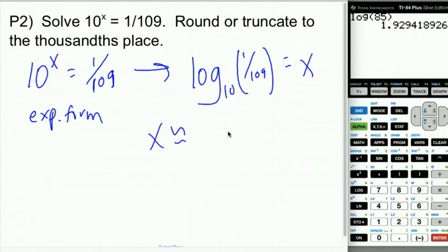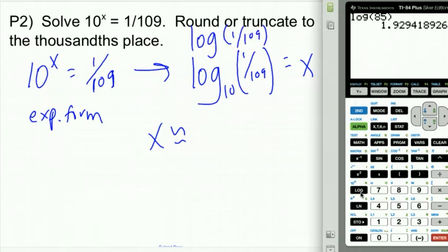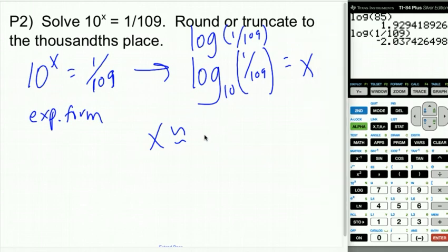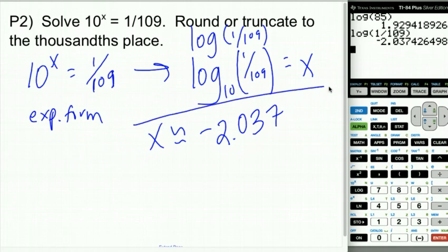I'm going to get that my X is approximately, and I'm just going to type in my calculator log of 1 divided by 109. I'm going to press the log button. I don't need the base 10 because that's what the log button in your calculator means. So 1 divided by 109, hit enter, and I'm going to get that that's negative 2.037.